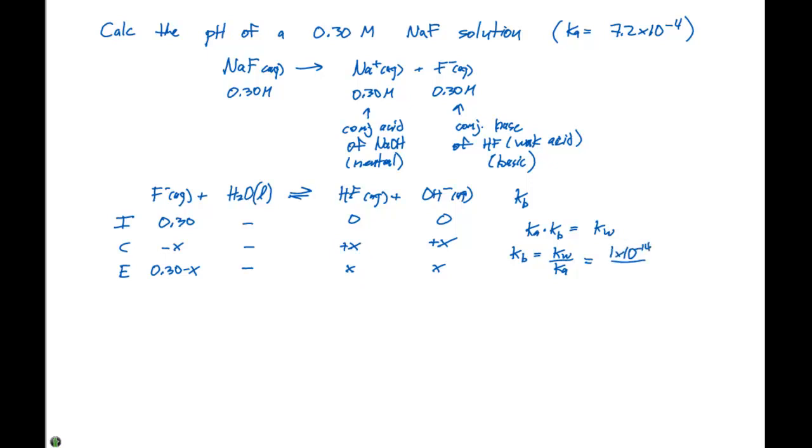1 times 10 to the -14 divided by 7.2 times 10 to the -4 is going to give us 1.39 times 10 to the -11, which is our Kb.